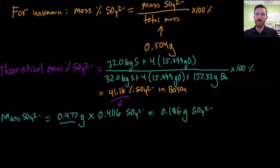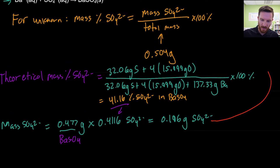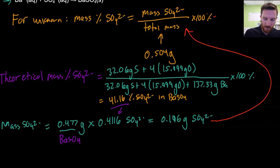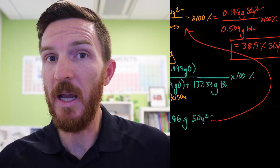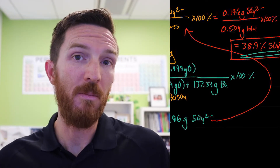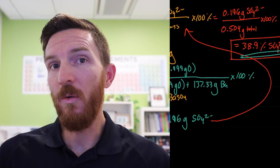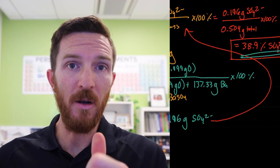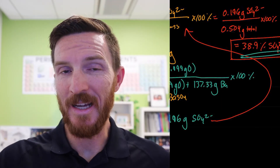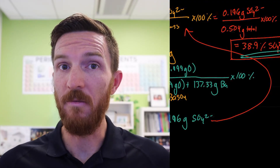We converted our percentage to decimal form and multiplied by the mass of barium sulfate to find how much is just sulfate. Now we have the mass of sulfate and our total mass, so we can find the percent of sulfate in the unknown. By dividing the mass of sulfate by the original mass of the unknown, we find a mass percent of 38.9% sulfate in the original unknown. That tells us something about any sample size, since mass percent is independent of sample size. But that is only one piece — the metal, sulfate, and water all need to be accounted for.